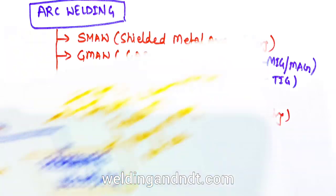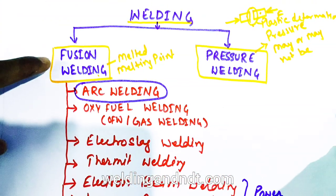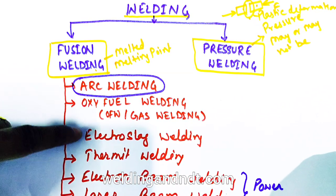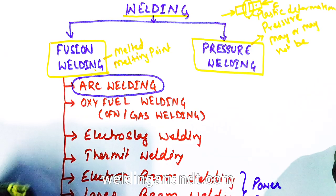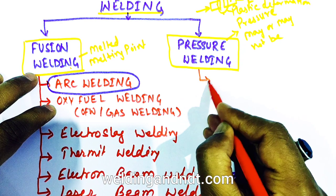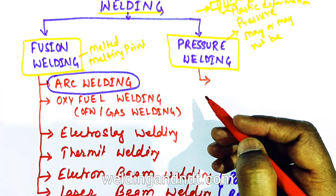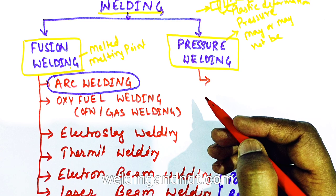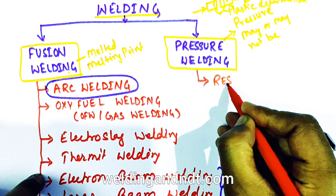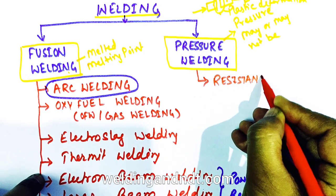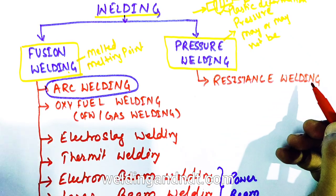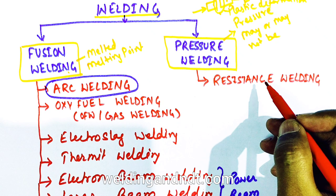Going back to the classification, fusion welding includes arc welding, oxy-fuel welding, electro slag, thermite, electron beam, and laser beam welding. Now for pressure welding, one of the most popular pressure welding processes is resistance welding, which is a very popular and common pressure welding process.